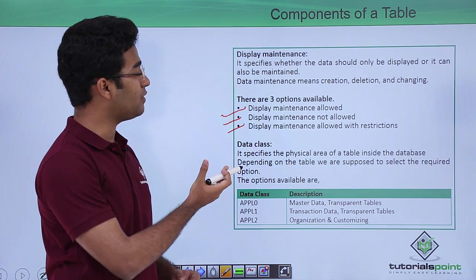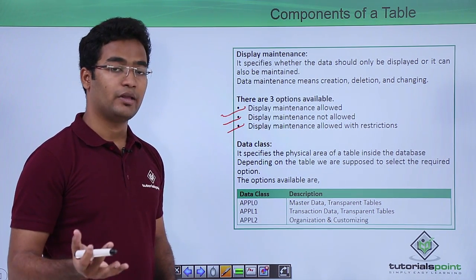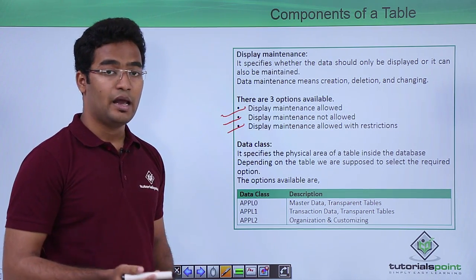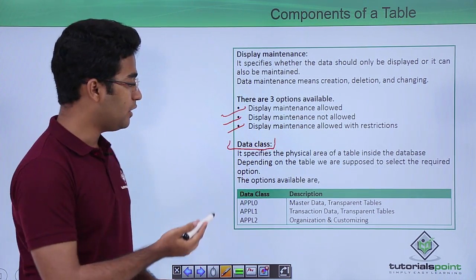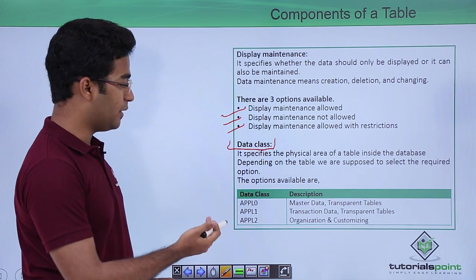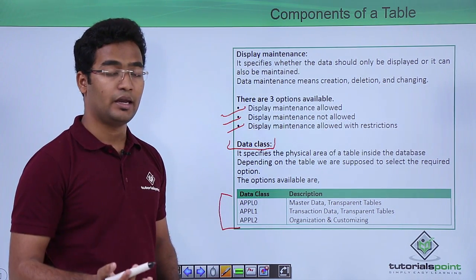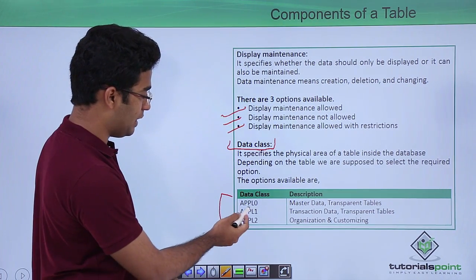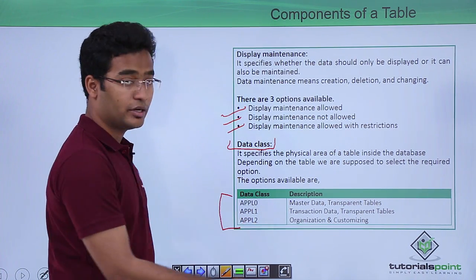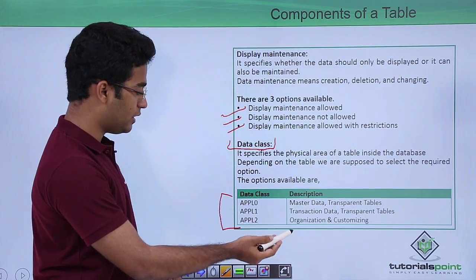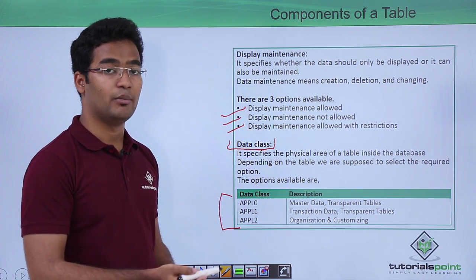After selecting both the delivery class and display maintenance, we select our fields. After that is done, we maintain our technical settings. On the technical settings screen, we maintain the data class. Data class specifies the physical area of a table inside the database — depending on the table, we select the required option. The available options are APPL0, APPL1, and APPL2. APPL0 is master data, APPL1 is transaction data, and APPL2 is organization data. These are the options available for the data class.